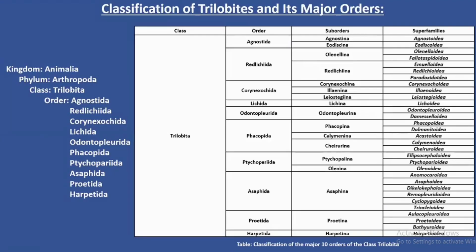The trilobites belong to the kingdom Animalia and under the phylum Arthropoda. They belong to the class Trilobita of the phylum Arthropoda. The class Trilobita has been divided into 10 major orders: Agnostida, Redlichiida, Corynexochida, Lichida, Odontopleurida, Phacopida, Ptychopariida, Asaphida, Proetida, and Harpetida. Here in this table we can see a systematic classification of the class Trilobita.